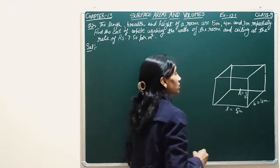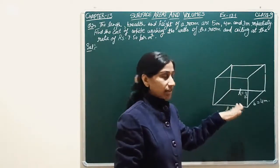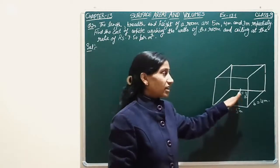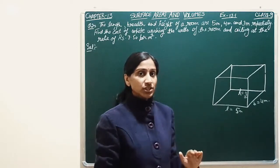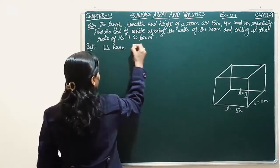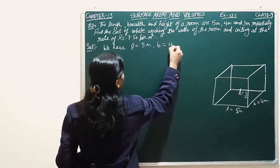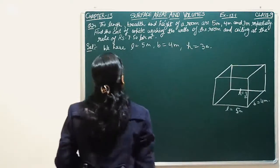Here we have to whitewash this room. So whitewash will be used on the walls and ceiling, not the bottom. L is equal to 5, B is equal to 4, and H is equal to 3.